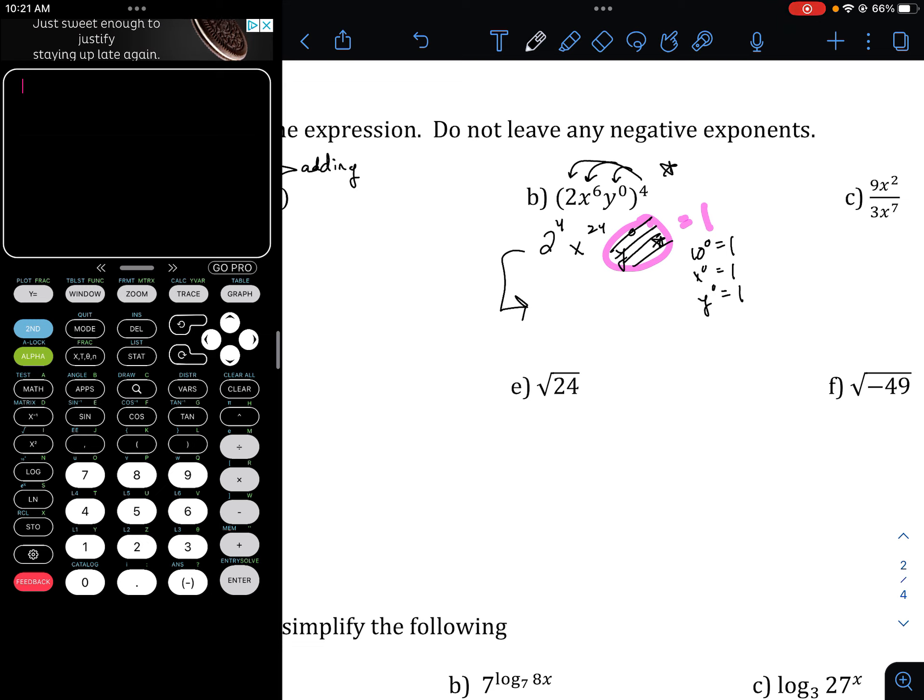So, 2 to the 4th, not 2 times 8, 2 to the 4th is 16, and x to the 24th, that is what you're looking at.